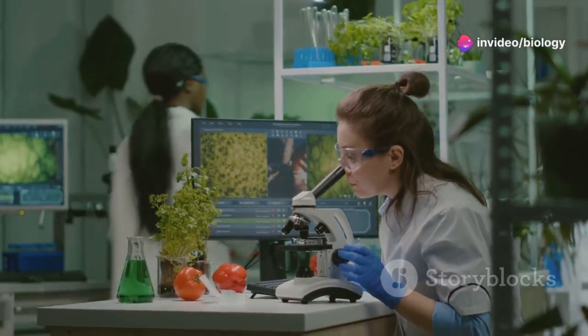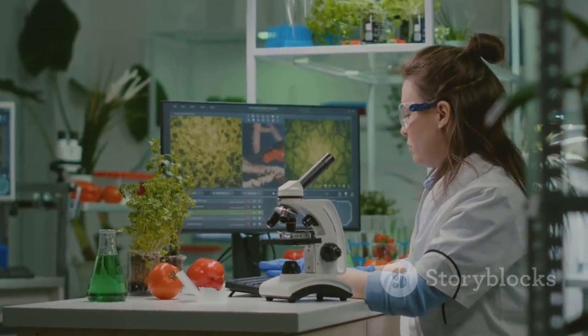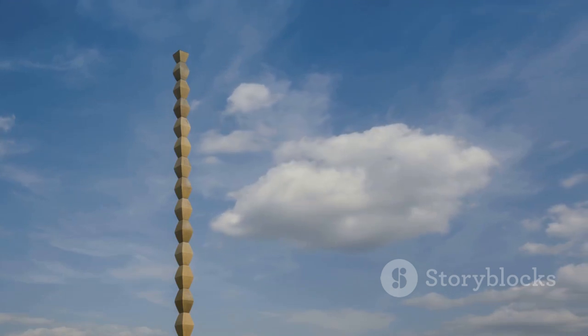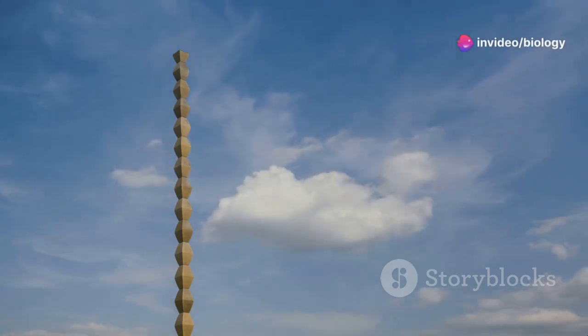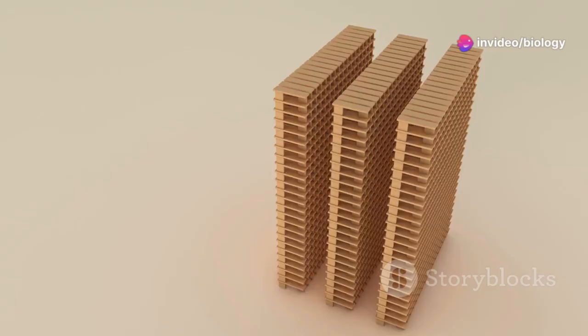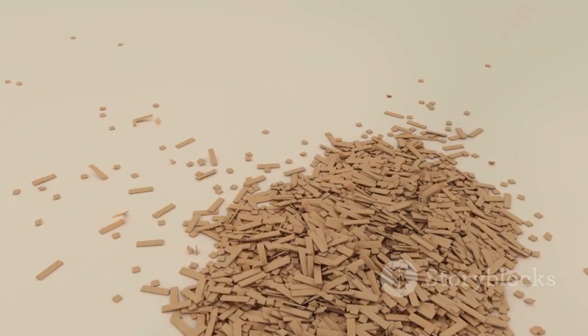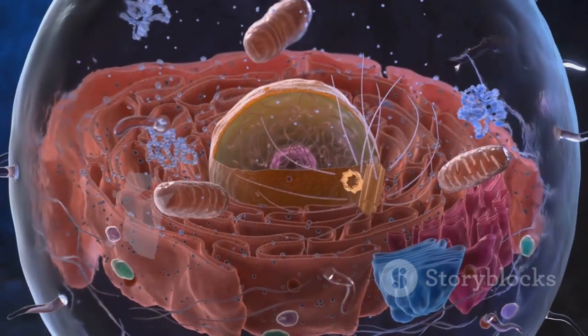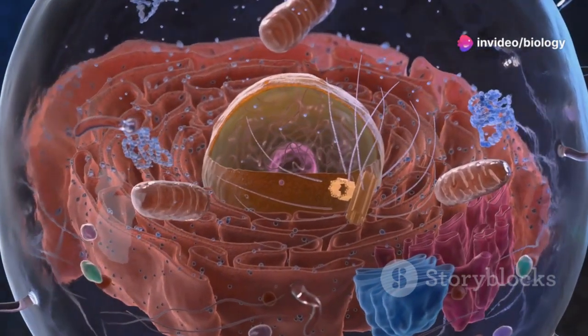And what did these two discover? That both plants and animals were made up of - you guessed it - cells. This revelation was monumental, bridging the gap between the plant and animal kingdoms. It was like finding out that the same building blocks were used to make everything from skyscrapers to tree houses.